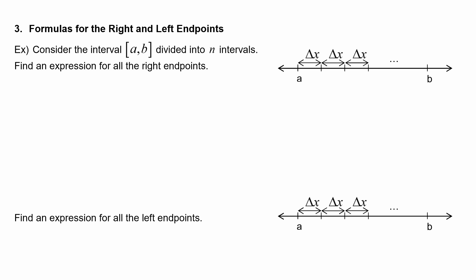Now we're going to work with formulas for the right and left endpoints. Consider the interval a to b, divided into n subintervals. The width of each of these little intervals is delta x, and delta x is equal to b minus a over n — the entire interval divided by how many subintervals we will have.